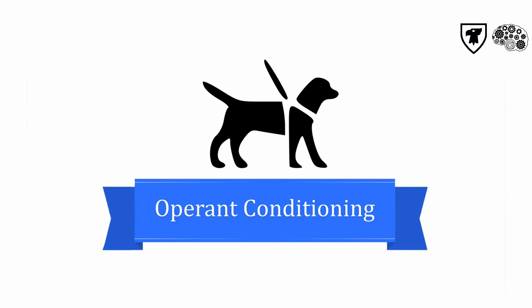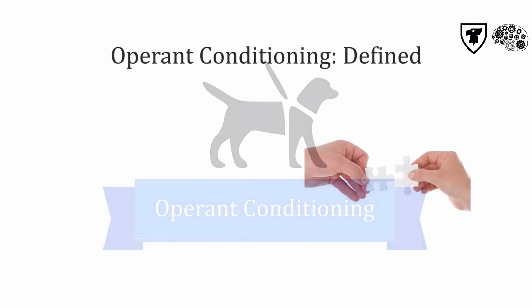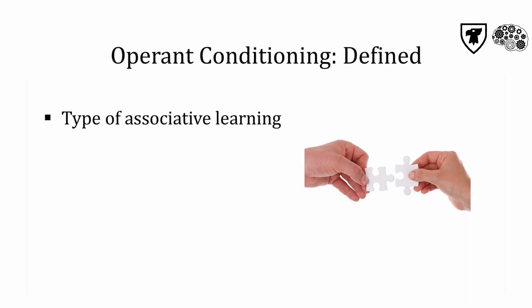Operant conditioning involves what most people call trial and error learning. This type of learning follows certain rules, and this knowledge has allowed us to manipulate conditions to reinforce desired consequences. It's a powerful tool that allows us to collaborate with other animals. Operant conditioning is one type of associative learning, where an individual makes a connection between two different stimuli or events.